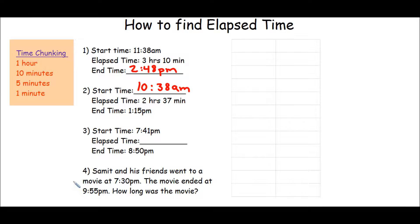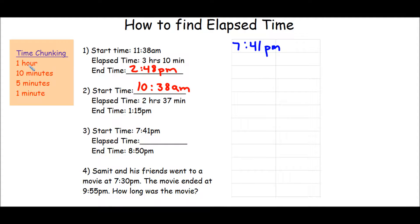Now let's look at a problem where we have our start time and our end time, but not the elapsed time. All we're going to do is write down our start time and add chunks of time until we reach our end time. This is 7:41 PM, and I ask myself: can I add 1 hour without going past 8:50? No. So I'm going to add chunks of 10 minutes.